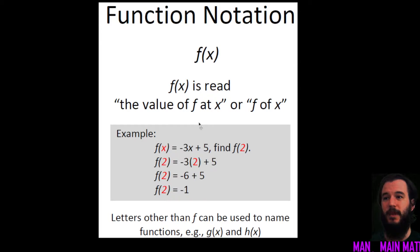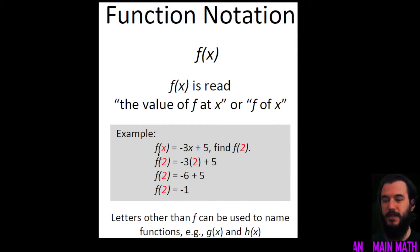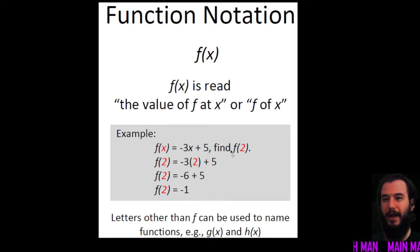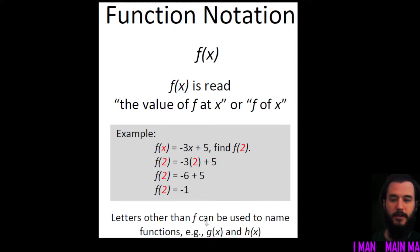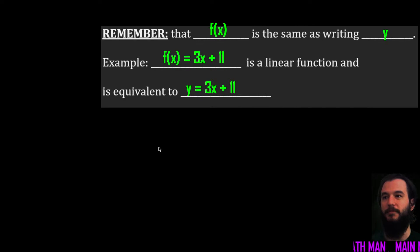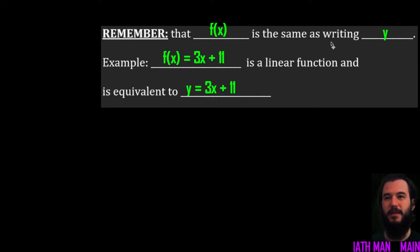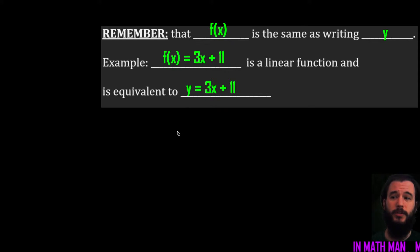All you're saying is that f is a function of x. For example, the one given here says f of x is equal to negative 3x plus 5 — that's the linear function we're talking about. It says, given this, find f of 2, meaning find your output when x equals 2. Other letters can be used instead of f — you can use g of x, h of x, or more simply the letter y. Remember, f(x) is the same thing as writing y.